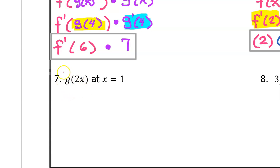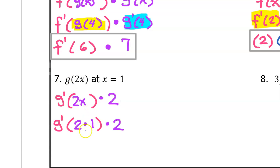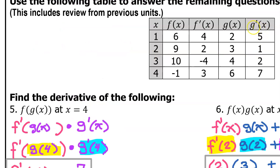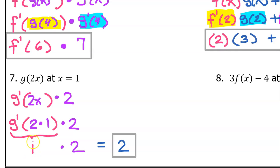For number 7, we need to take the derivative of this. Again, we will use the chain rule, taking the derivative of the outer function and leaving the inner function alone, but then multiplying by the derivative of the inner function. The derivative of 2x is just 2. But don't forget we are supposed to evaluate at x equals 1, so I am substituting 1 in for x, giving me 2 times 1. So this is really g prime at 2. Looking up at the chart, g prime at 2 is 1, so I have 1 times 2, which is just 2.